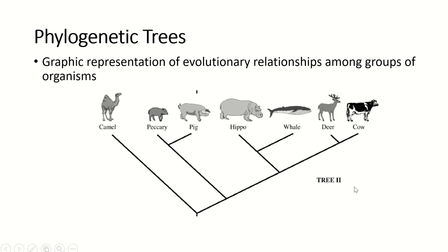Let's talk about phylogenetic trees, which are how we represent the evolutionary relationships among groups of organisms. Here is a tree that shows a group of mammals: the camel, the peccary (which is a wild pig), the domestic pig, the hippo, the whale, the deer, and the cow. This seems a little unusual, which is why I chose this tree — hippos and whales are related to cows and pigs.